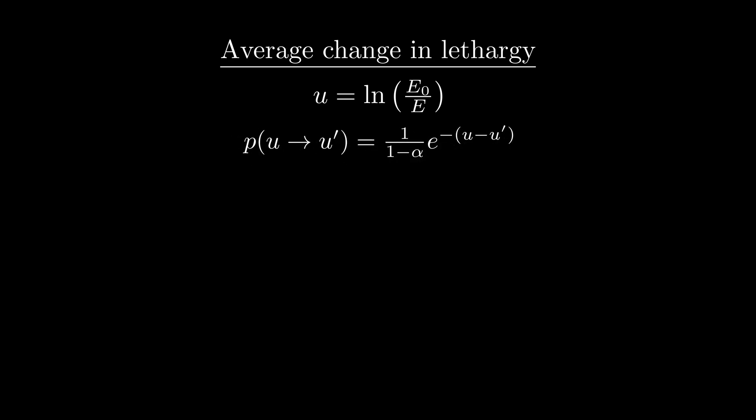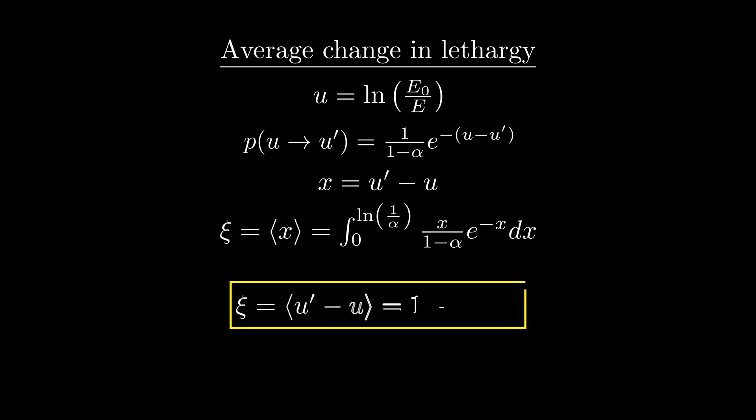So to calculate our mean change in lethargy, we follow the same procedure as before and integrate our lethargy probability density function times U prime. Now this can be made a little easier if we define a helper variable x, which is the change in lethargy. The symbol we normally use to represent the mean change in lethargy is psi, which is unfortunate because it's impossible to write in your notes. And I'll spare you a full description of the math, but with a little help from integration by parts, we can get an answer. The mean change in lethargy for a scattering interaction is 1 plus alpha times the natural log of alpha over 1 minus alpha.